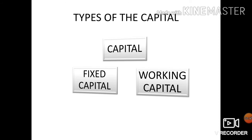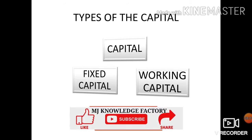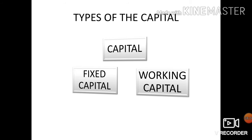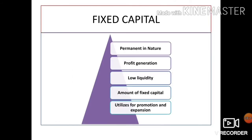The capital is divided into two types: fixed capital and working capital. Fixed capital is the portion of capital which is invested in acquiring long-term assets such as land, buildings, plant and machinery, furniture and fixtures, which are highly required to establish the structure of the business. These assets are not meant for resale; they are the basic requirements of the company. The features of fixed capital are: permanent in nature, profit generation, low liquidity, and amount of fixed capital utilized for promotion and expansion.